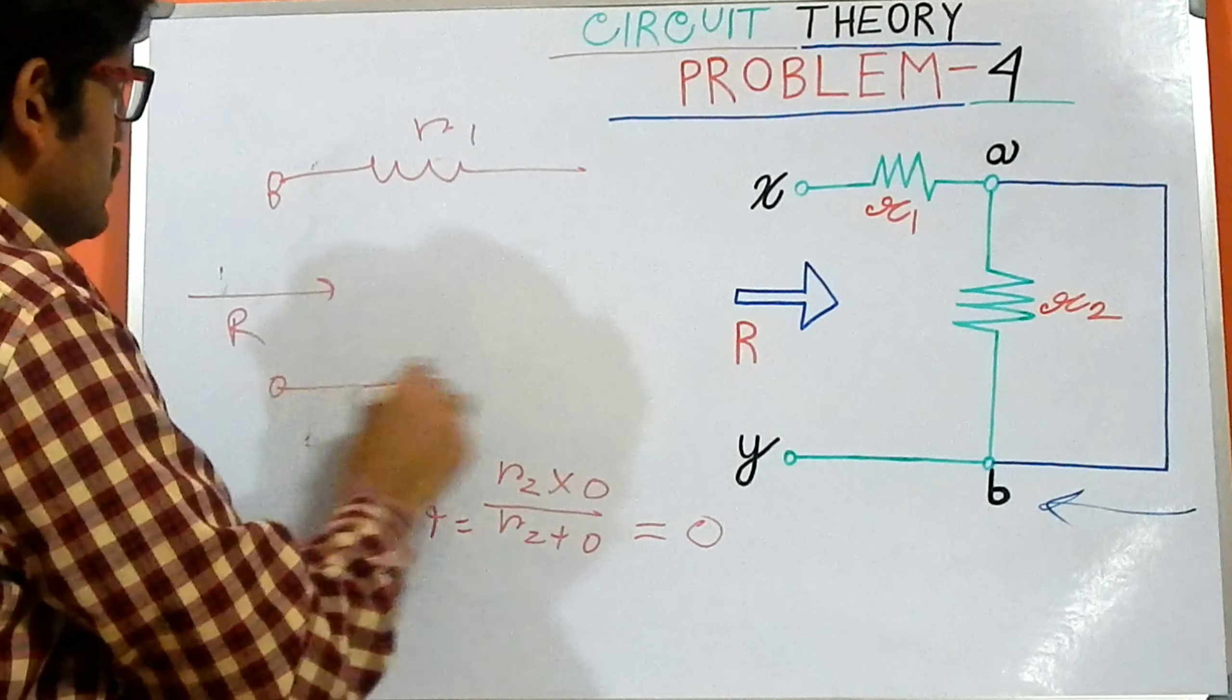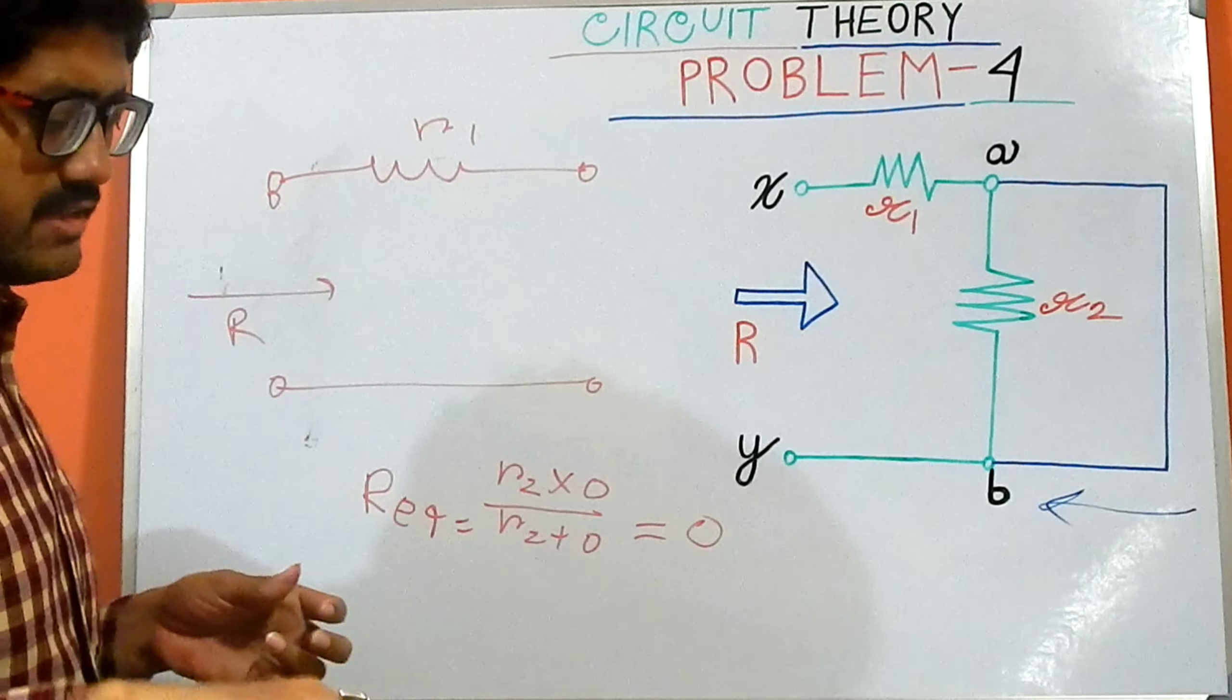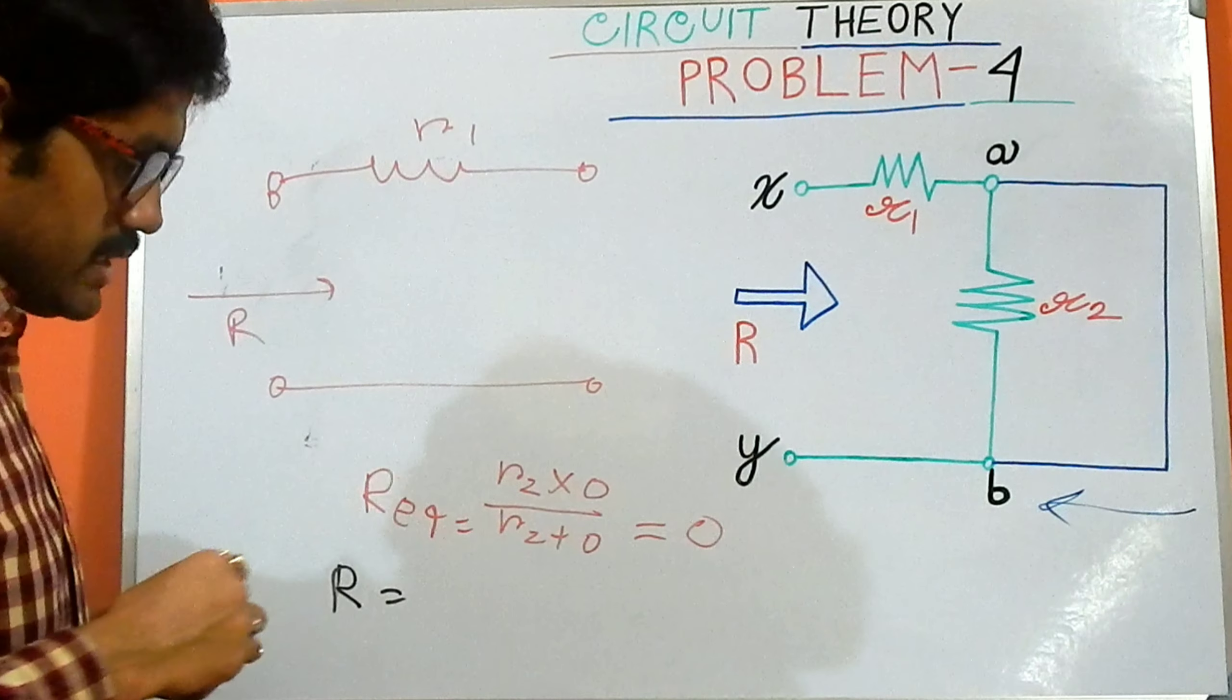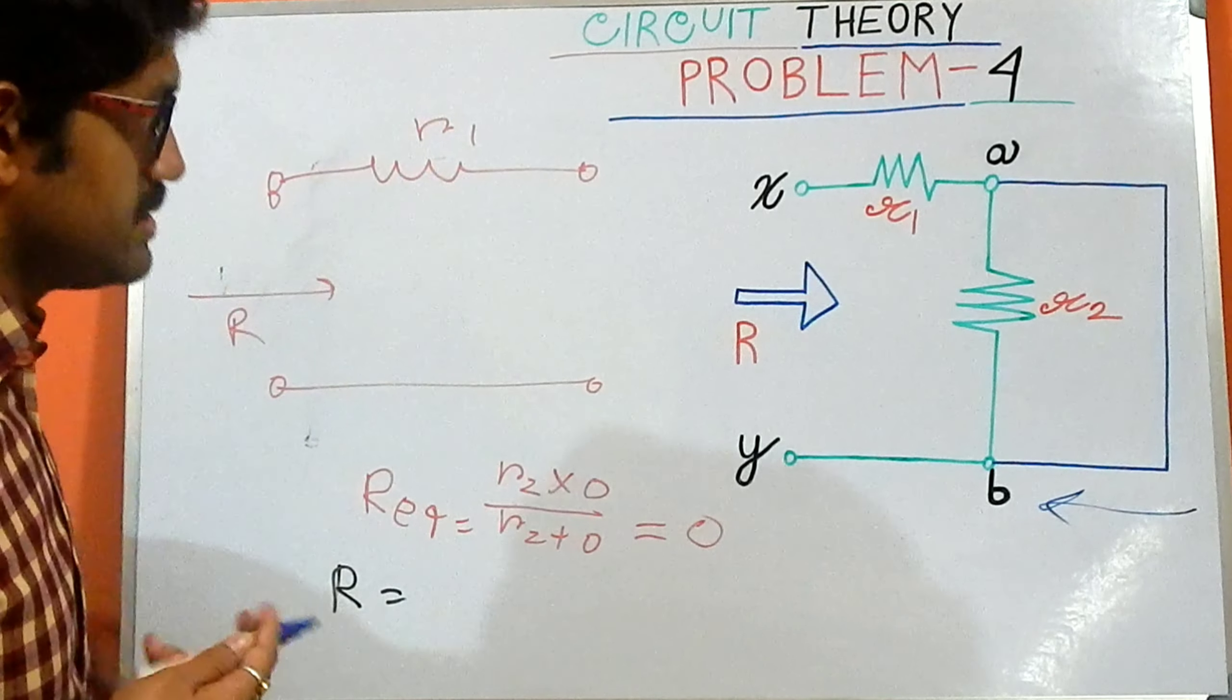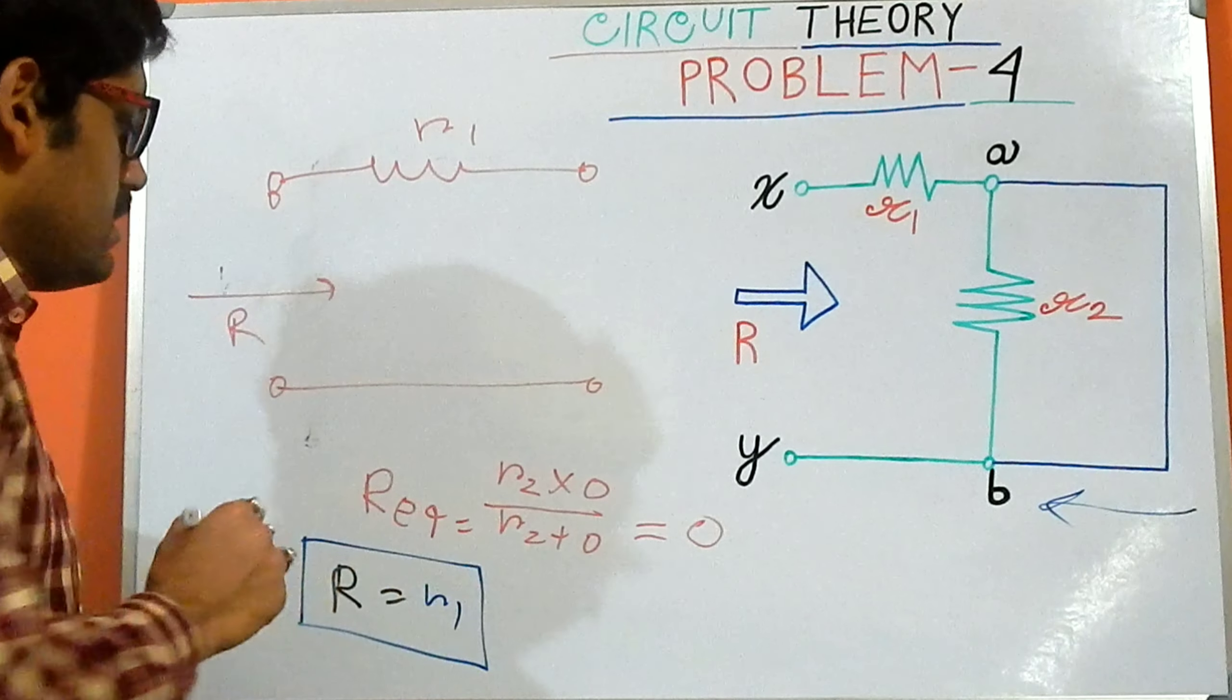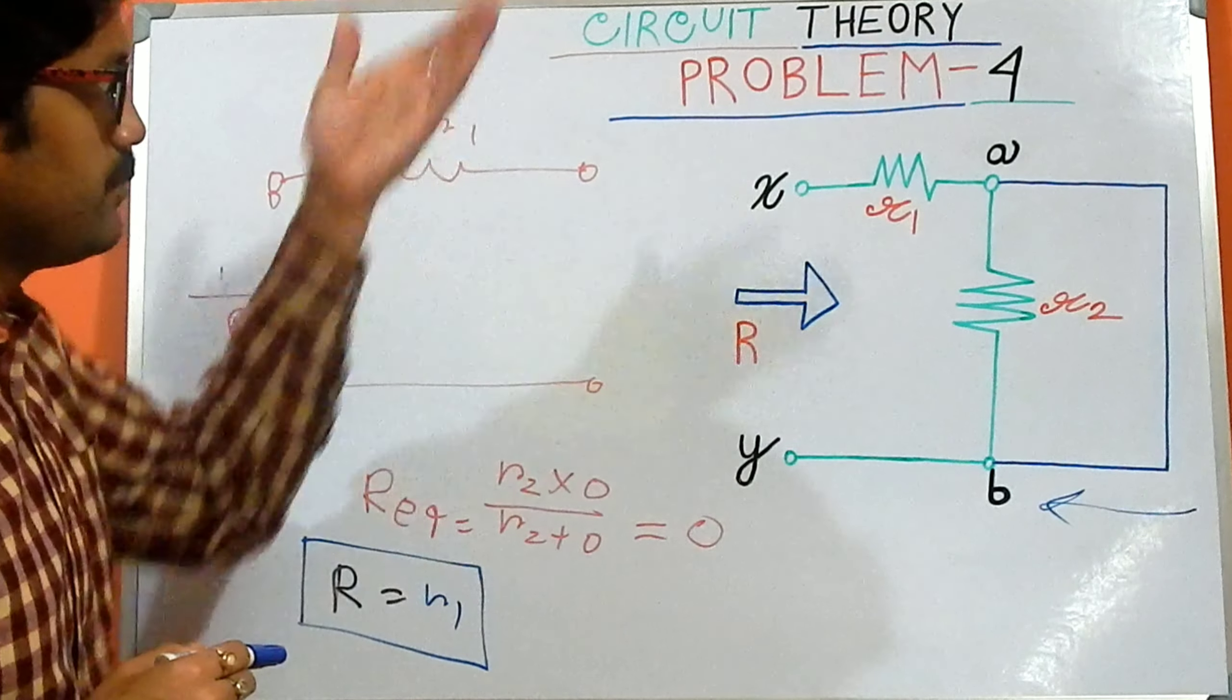This is my final answer. Only one resistance is present over here and the equivalent resistance is R1. So R equals R1. This is our final answer for this mathematical problem or problem 4.